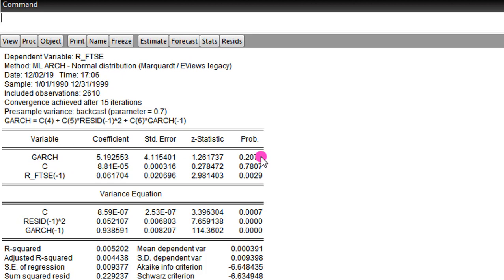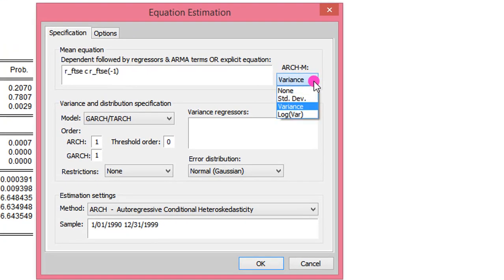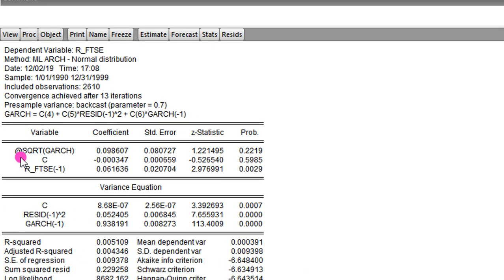But including it has improved the GARCH term in the variance equation. Now let's use the standard deviation and see whether we are going to have a different outcome. So we click on Estimate. We modify variance now to standard deviation. We don't change anything. We click OK.